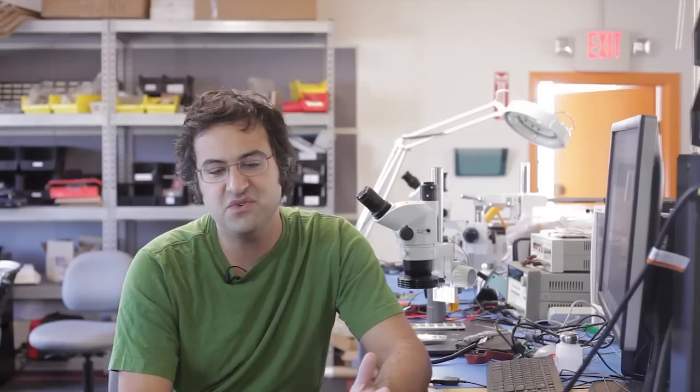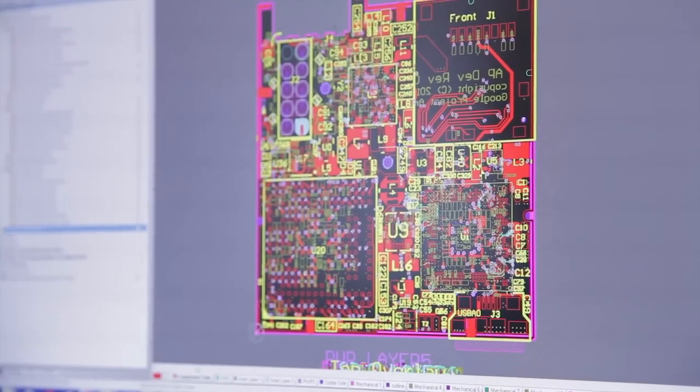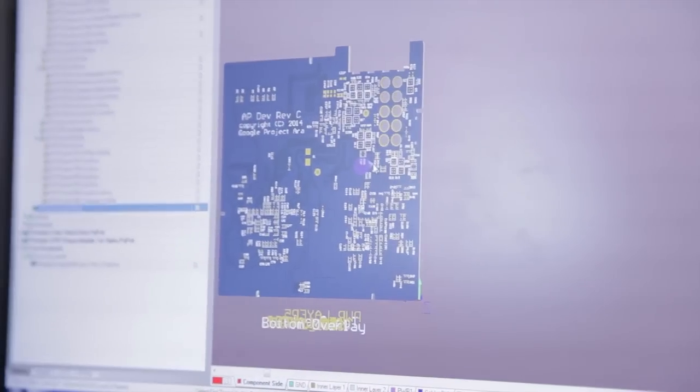And then from there, you go to selecting specific components and then you go to drawing schematics where you have the blocks representing each one of the components.